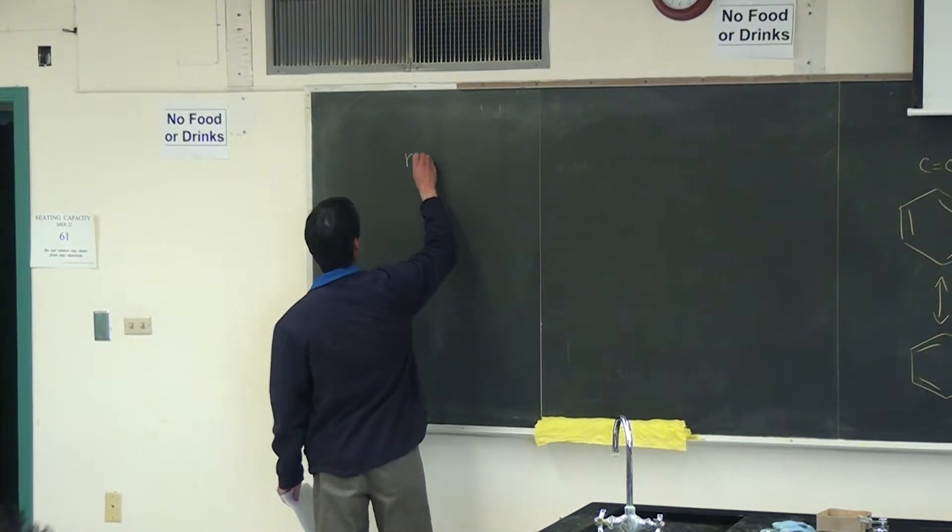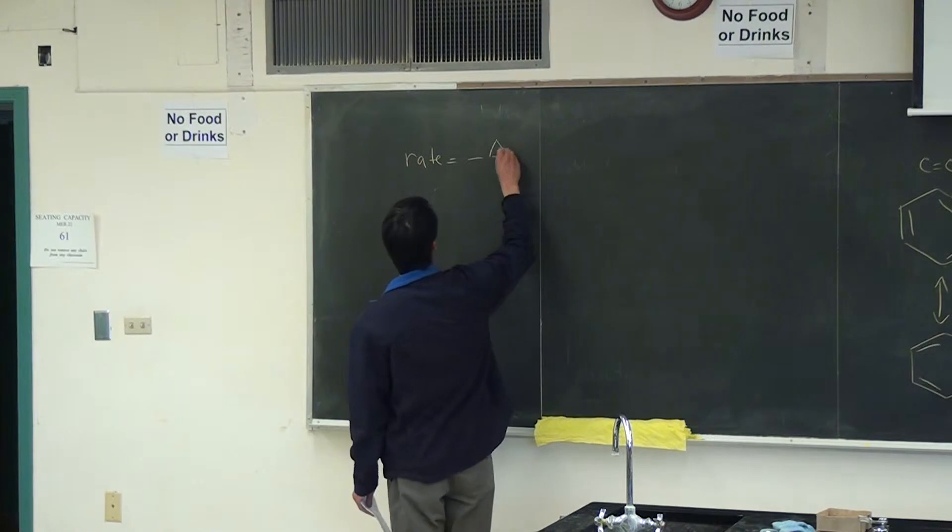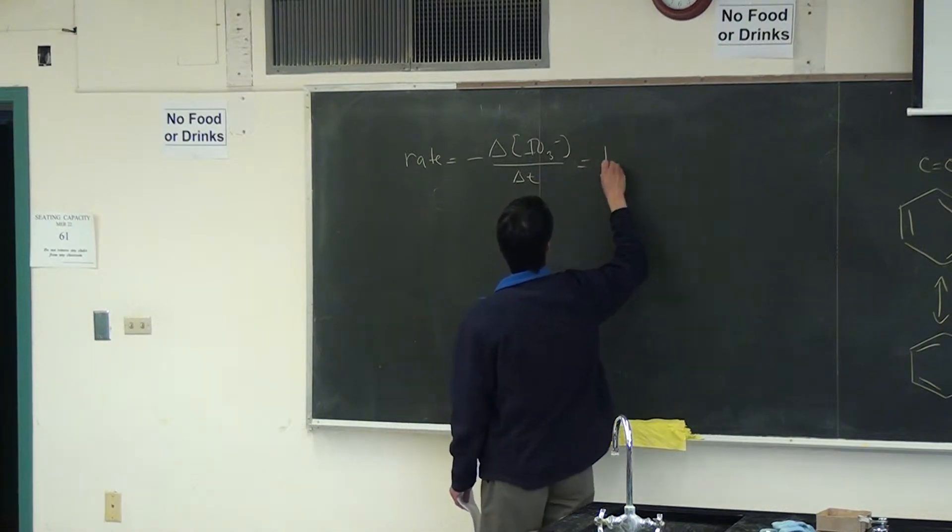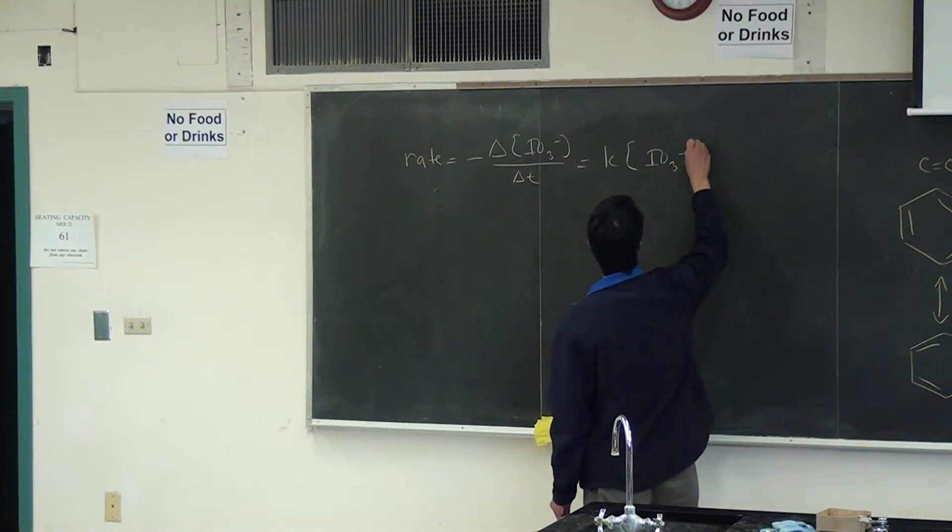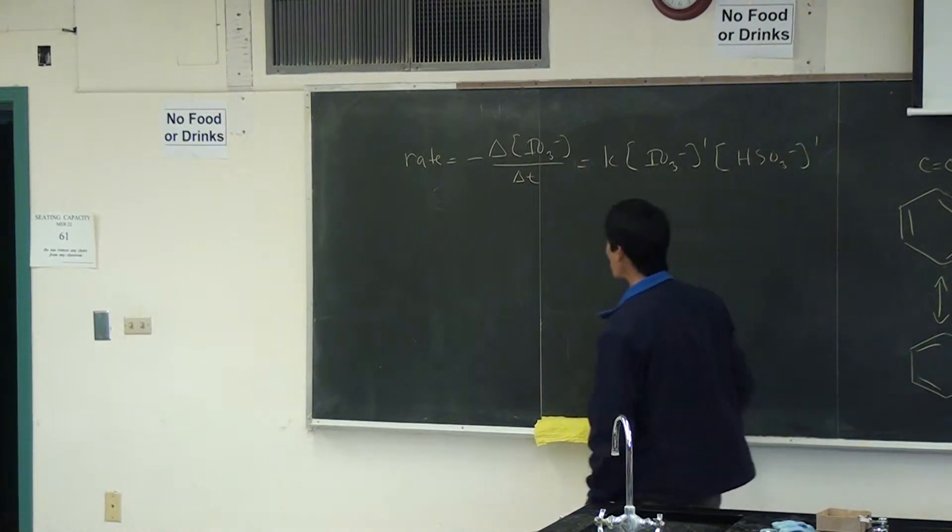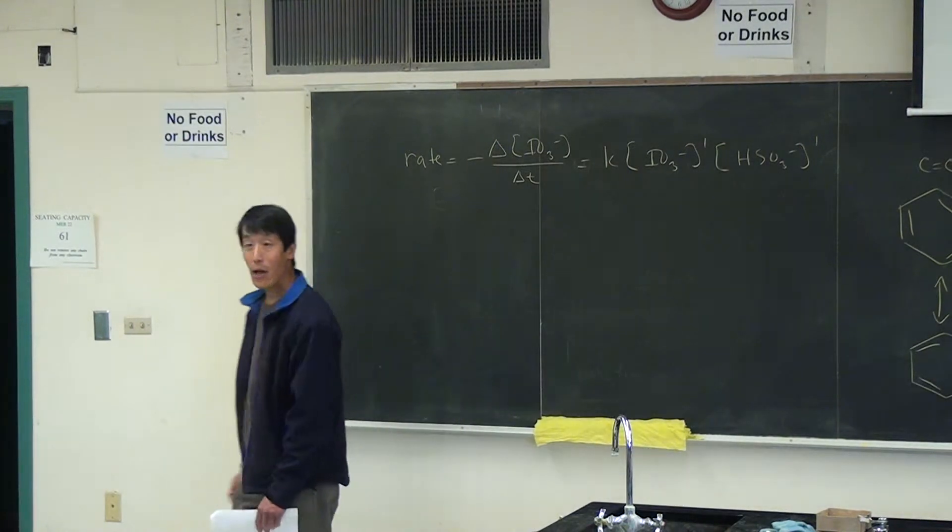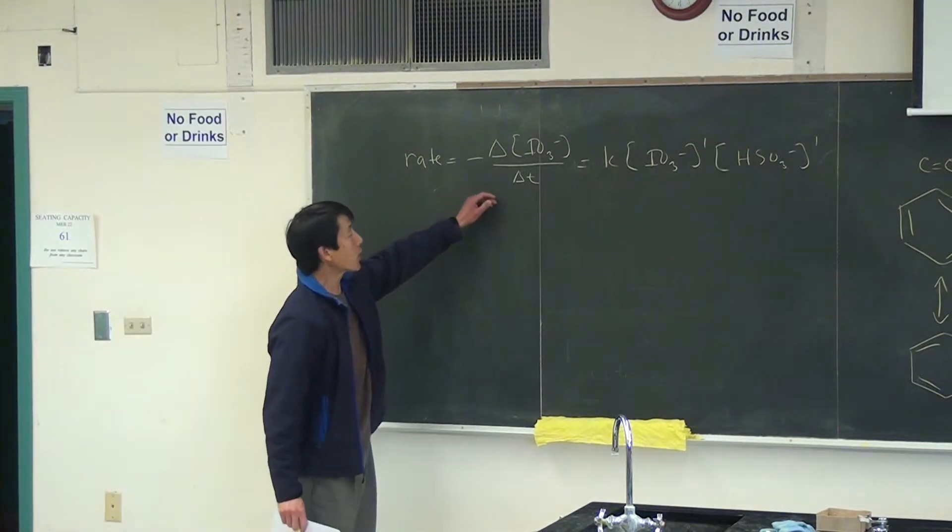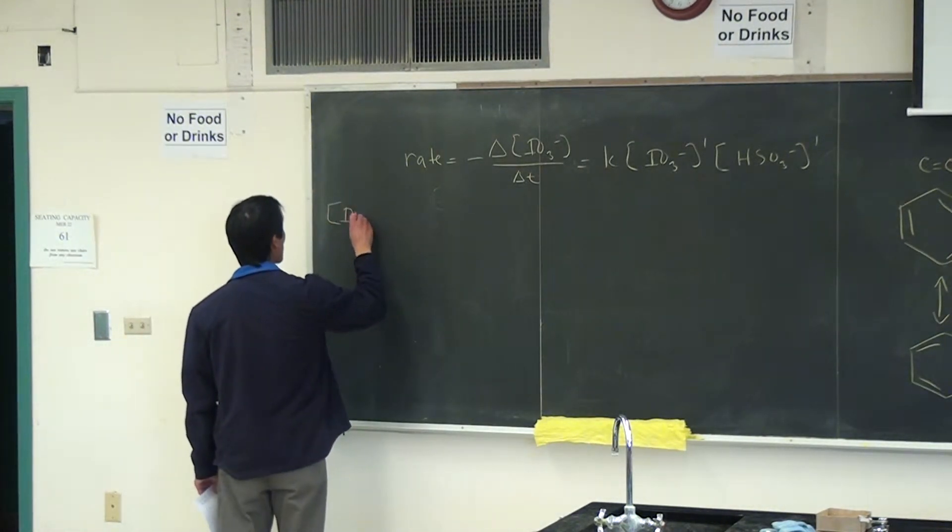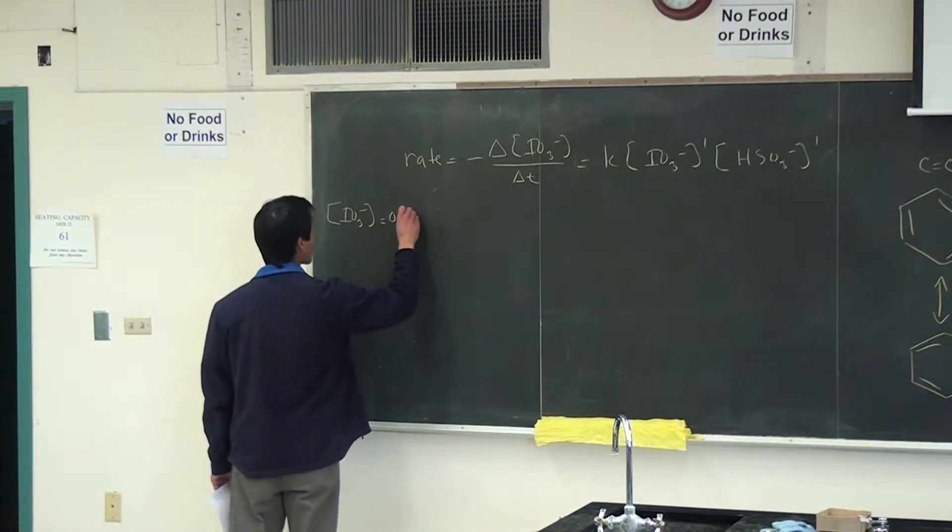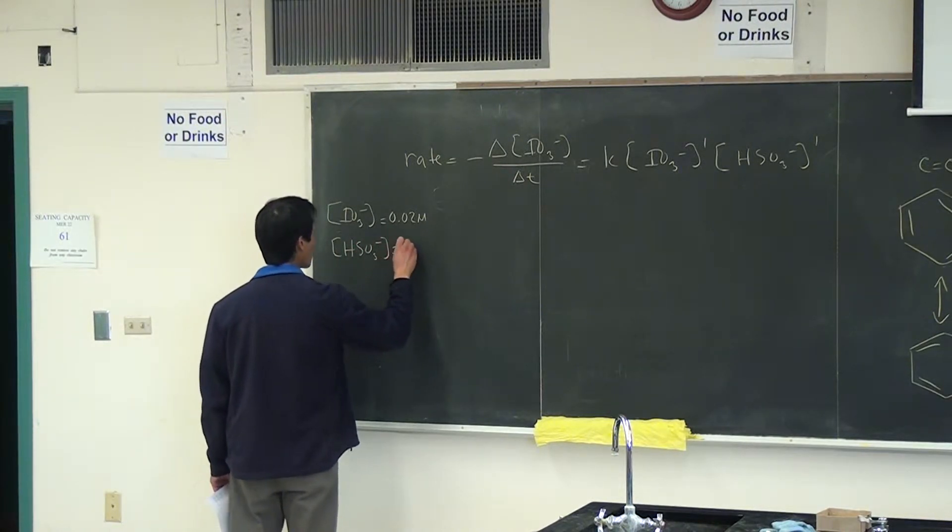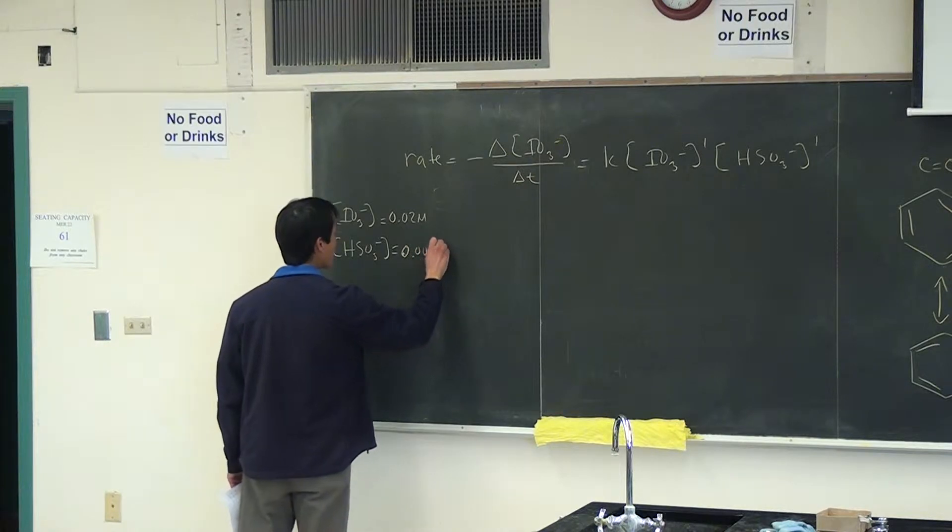Okay, so for this one, note that the rate is equal to the change in the IO3 minus concentration with respect to time. And that's equal to rate constant K times IO3 minus to the first power times HSO3 minus to the first power. Now knowing in lab, the way we do the calculation is that when we started with a point,